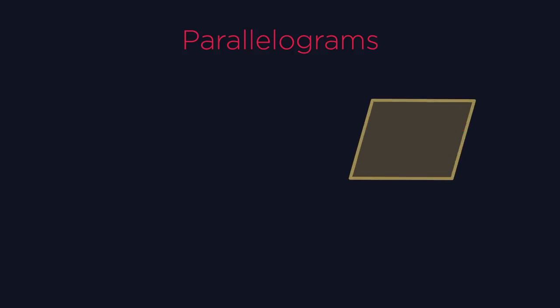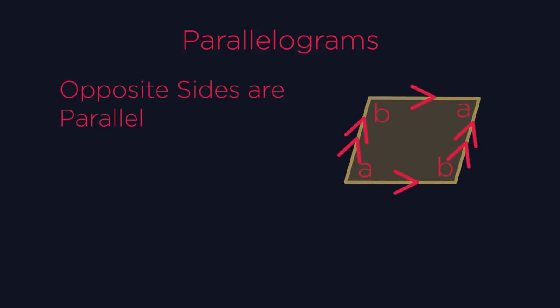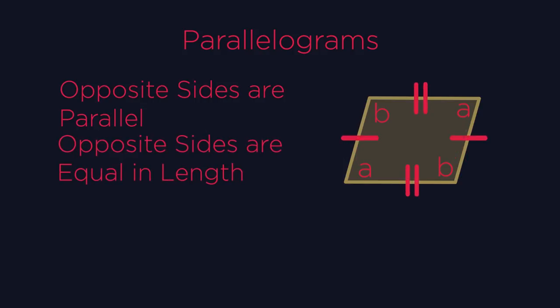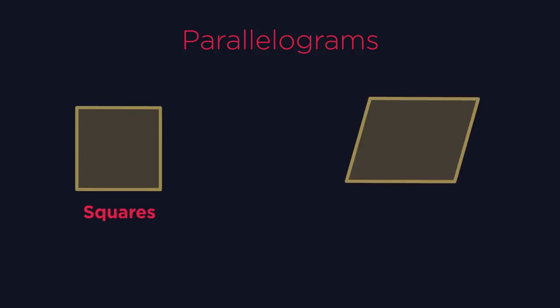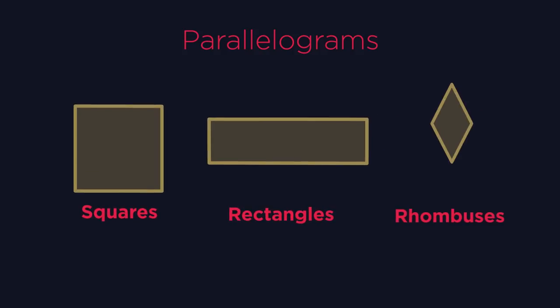They have parallel opposite sides that are equal in length. So these and these. The opposite angles are also equal, like in rhombuses. Squares, rectangles and rhombuses all meet these requirements. Hence, they're parallelograms.